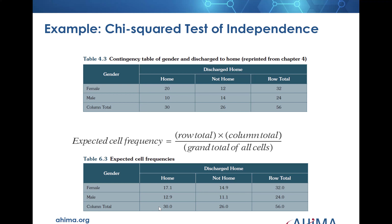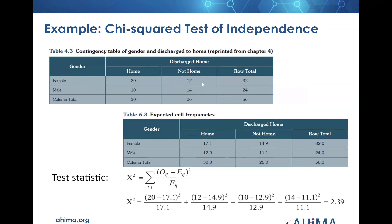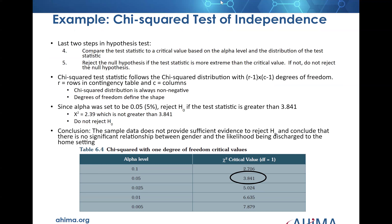The column total is displayed here: home 30, not home 26. Then we need to calculate the expected cell frequencies. What's really important is to understand what chi-squared does. If we were to work this all the way to the end, we would compare the test statistic to a critical value listed based on the alpha level and the distribution of the test statistic. We would reject the null hypothesis if the test statistic is more extreme than the critical value; if it isn't, then we don't reject it.